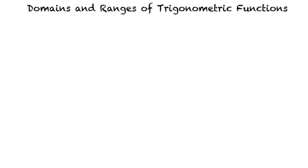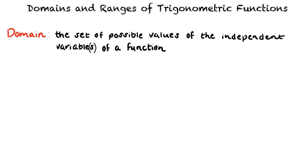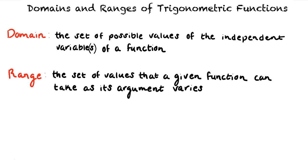This video will cover the topic of domains and ranges of trigonometric functions. Let's begin by reviewing the definition of domain and range. Domain is the set of possible values of the independent variable or variables of a function. Range is the set of values that a given function can take as its argument varies.